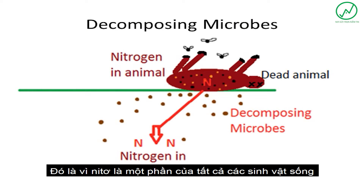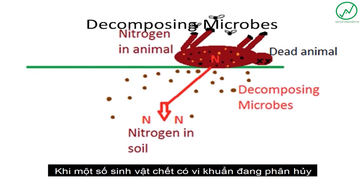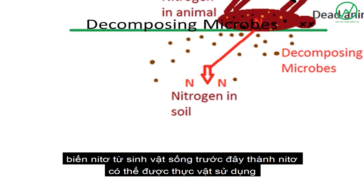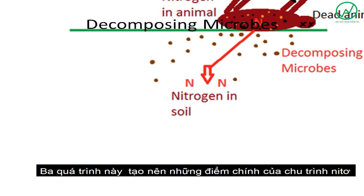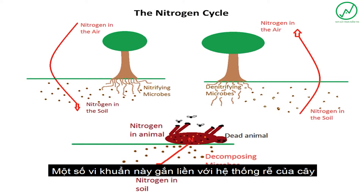Since nitrogen is part of all living organisms, when some creature dies, there are decomposing microbes that turn the previously living creature's nitrogen into nitrogen that can be used by other currently living organisms, such as plants. These three processes make up the main points of the nitrogen cycle.